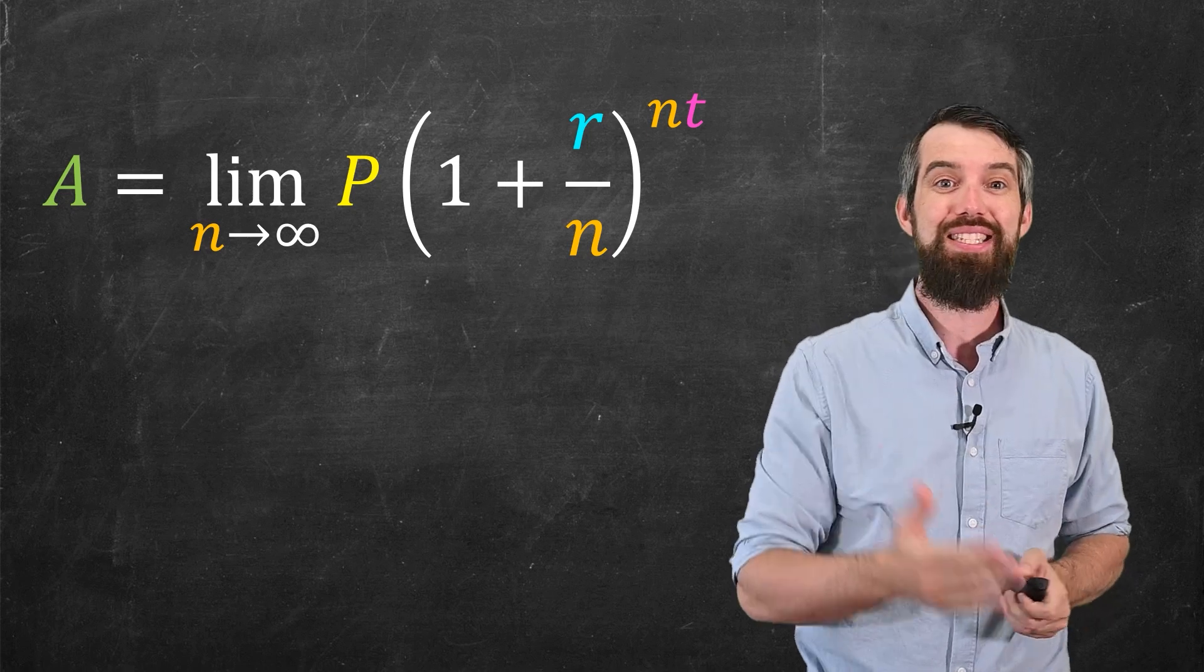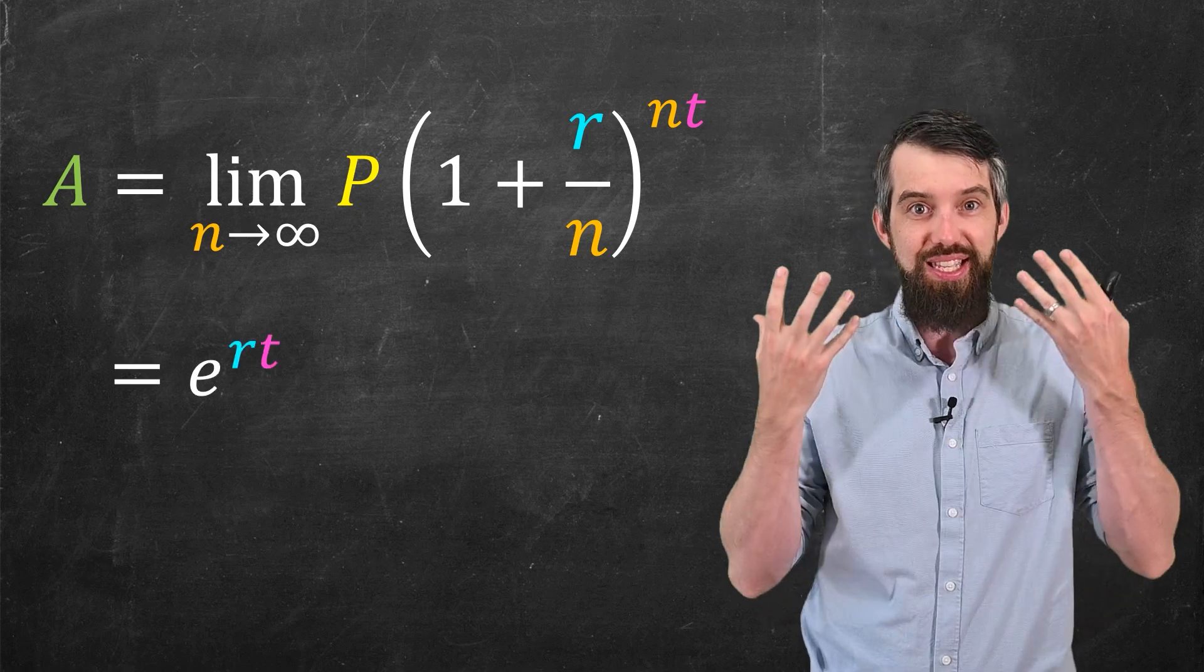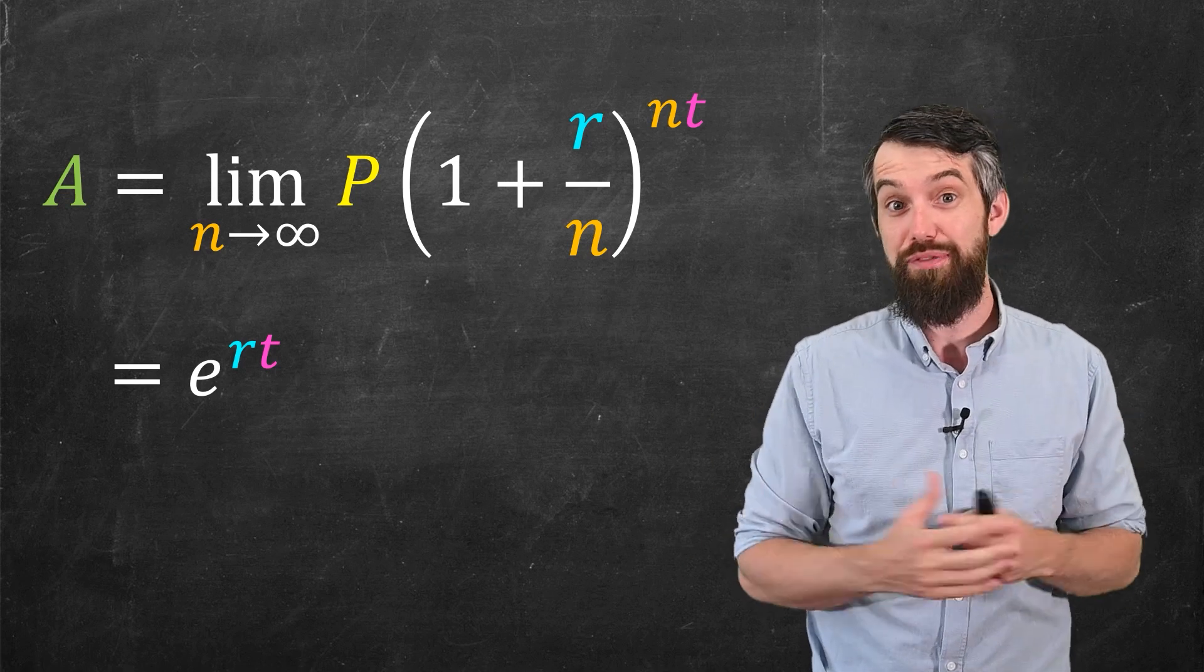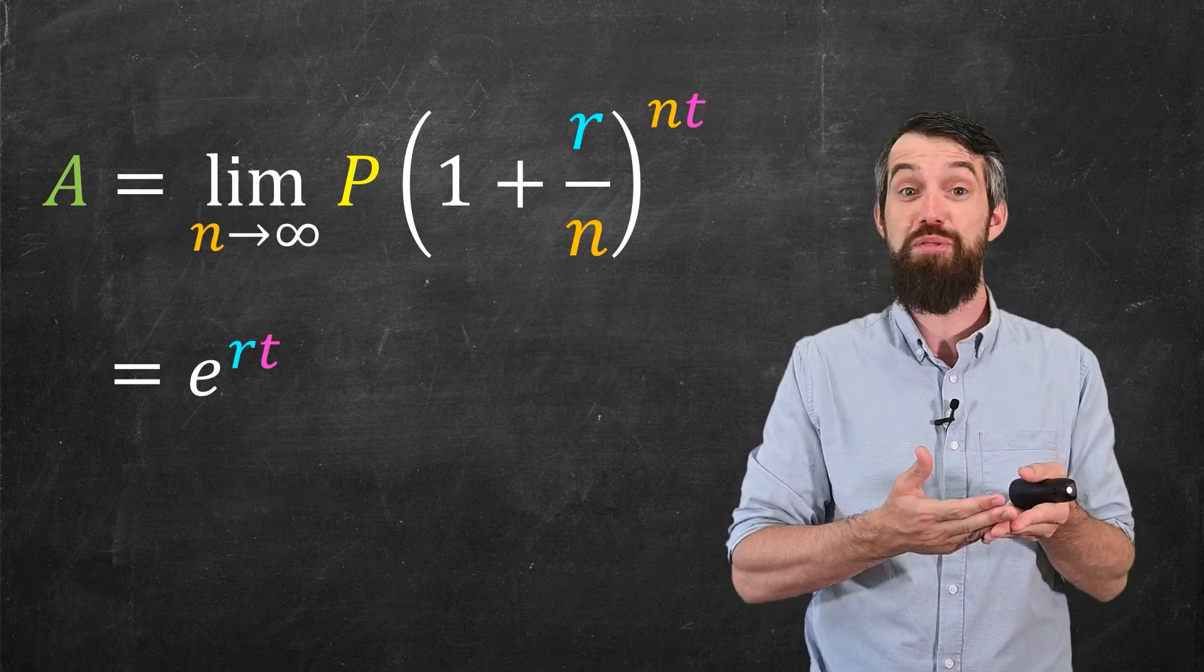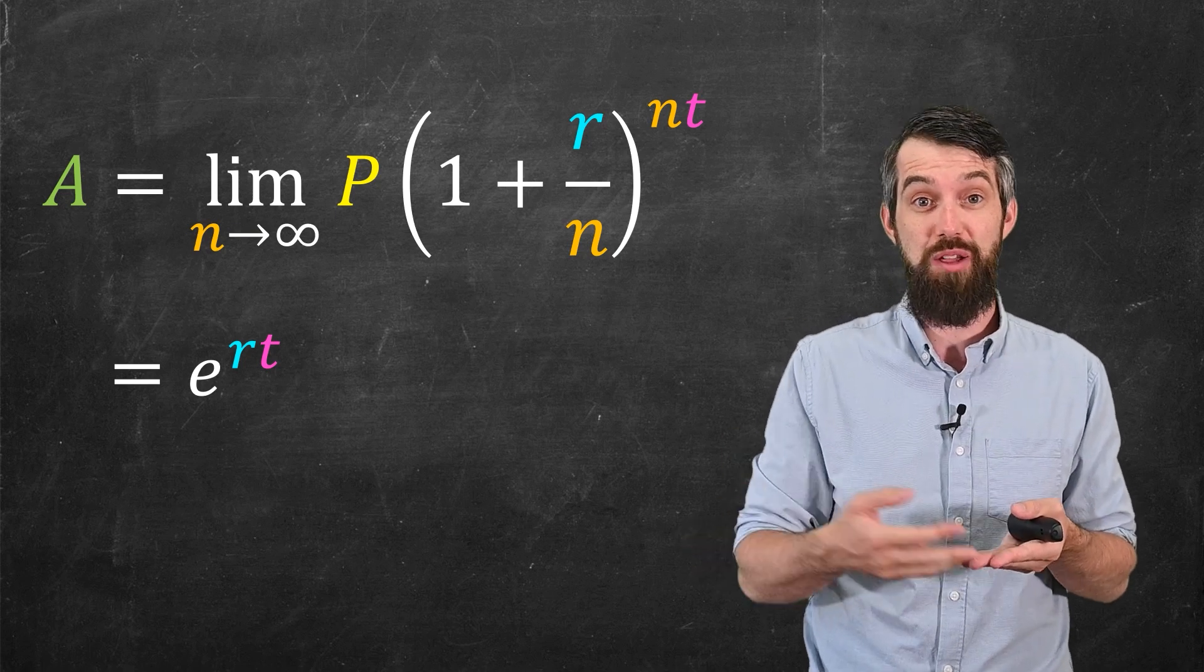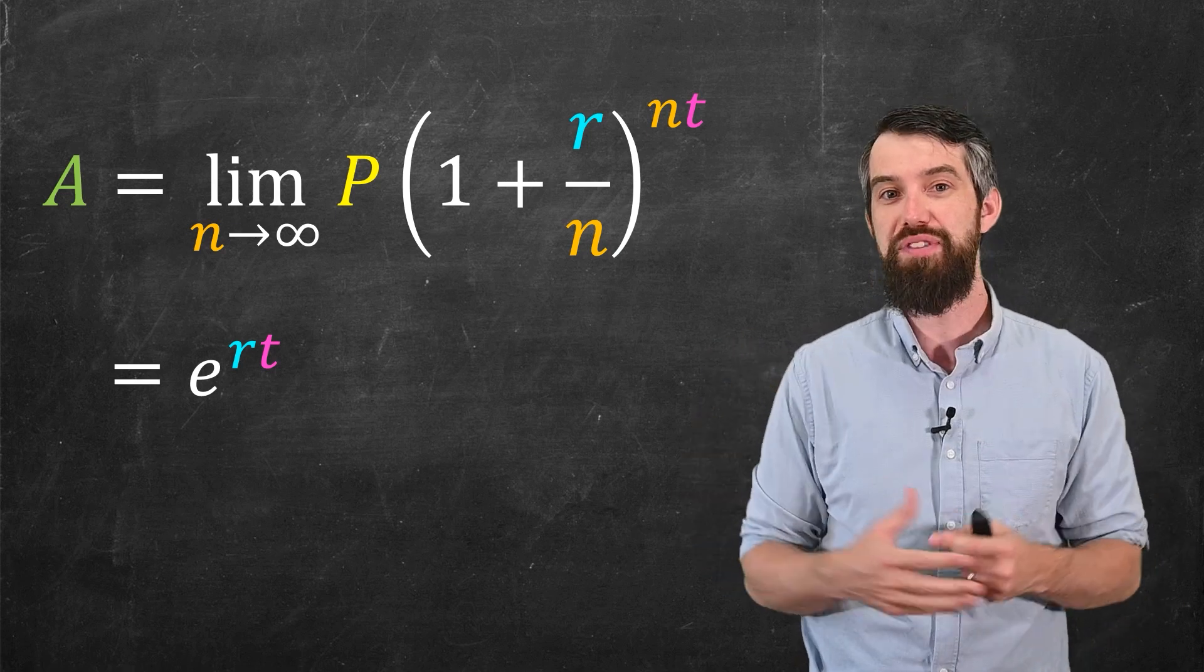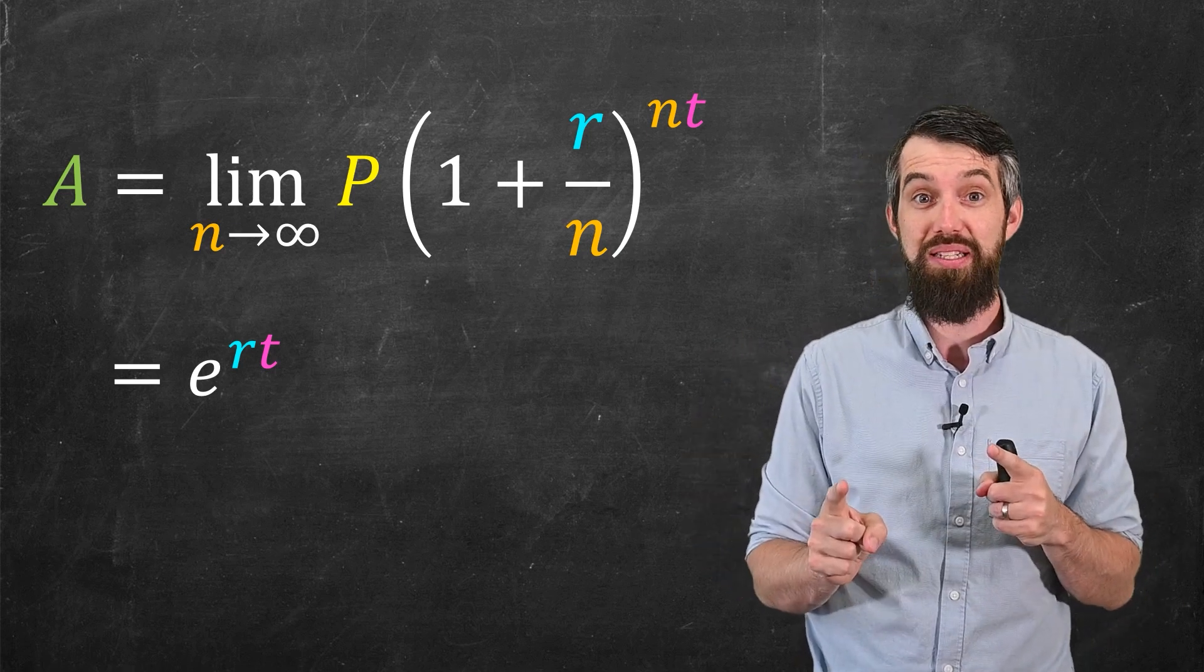This limit is a known limit from calculus, and in fact, it has a simple answer. It's just e to the rt. This is an exponential function. This by the way is a continuous function. That is, t doesn't have to be an integer number of years. It could be some fraction of a year. This formula just is going to work for any amount of time.